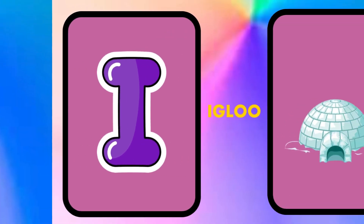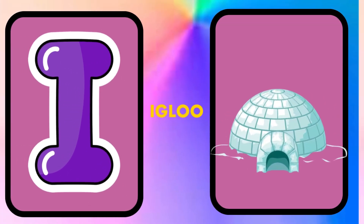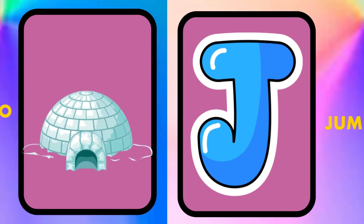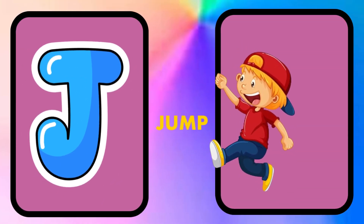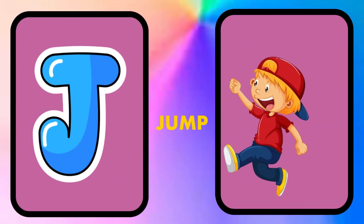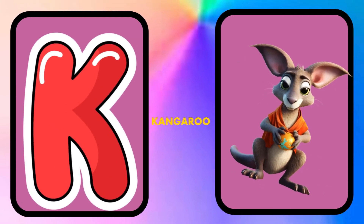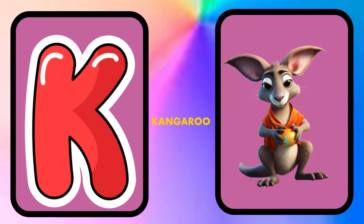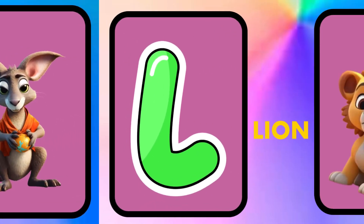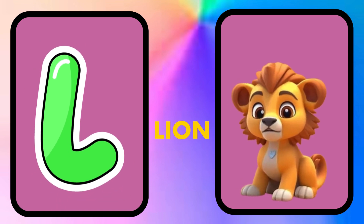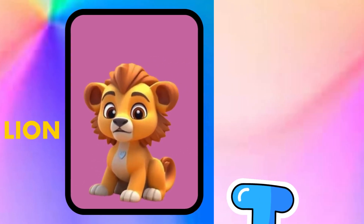I is for igloo, i-i-igloo. J is for jump, j-j-jump. K is for kangaroo, k-k-kangaroo. L is for lion, l-l-lion.